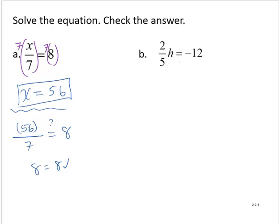2 fifths h is equal to negative 12. The variable term is isolated. And we have the h being multiplied by 2 fifths. To undo a multiplication, we divide. So I will divide by 2 fifths both sides of the equation.